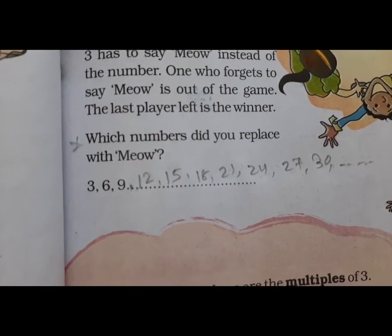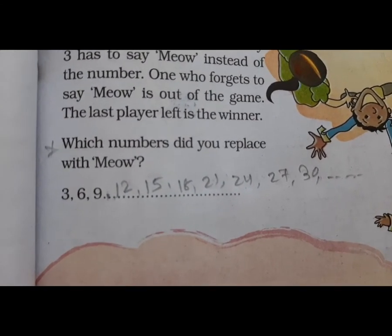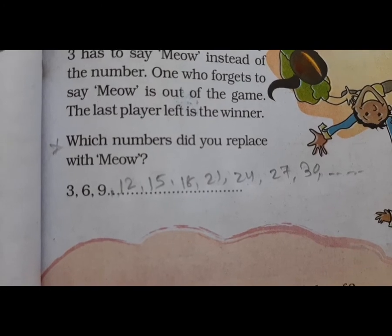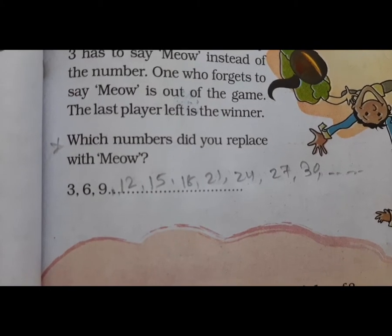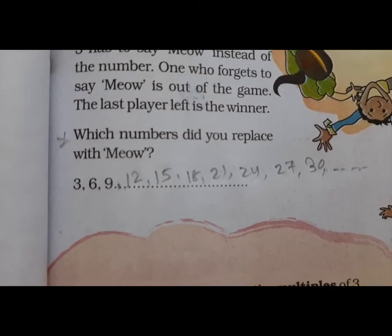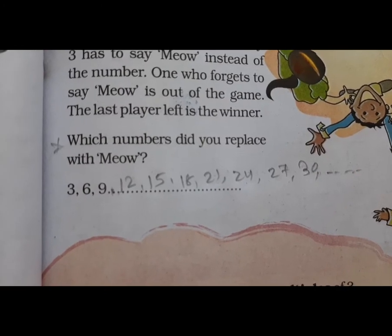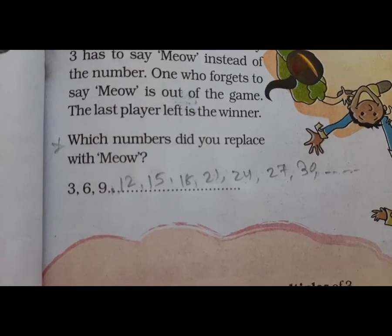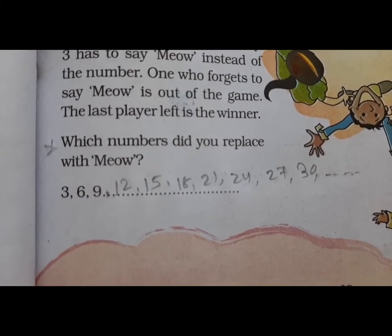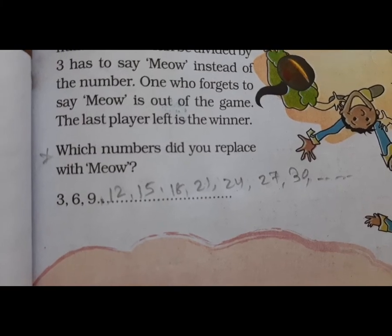Which numbers will come in place of meow? 3 ones are 3, 3 twos are 6, 3 threes are 9, 3 fours are 12, 3 fives are 15, 3 sixes are 18, 3 sevens are 21, 3 eights are 24, 3 nines are 27, 3 tens are 30.